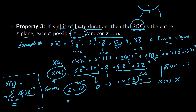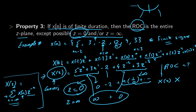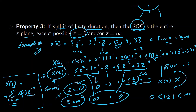Similarly, if we set Z equal to infinity, the positive-power terms become infinity and the negative-power terms become zero, so again it is not converging. These are the two values for which it does not converge; otherwise it converges. Hence for this signal, the ROC is simply 0 < |Z| < infinity — all values except these two extremes are within the region of convergence.